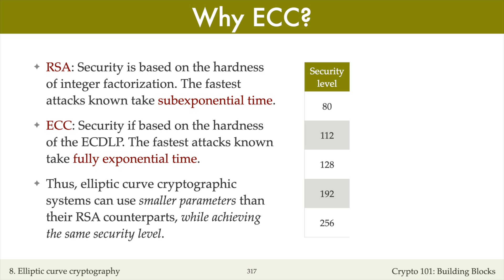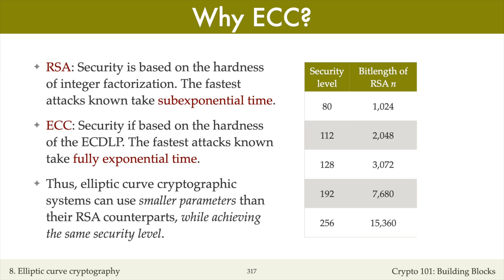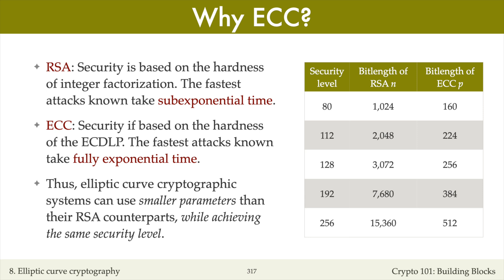More concretely, to achieve five security levels shown in the table, one can use RSA with moduli n of given bit lengths. These bit lengths come from estimates for factoring numbers of that bit length using the number field sieve. On the other hand, the bit lengths of the prime p in elliptic curve cryptographic systems for achieving the five security levels is just twice the security level. This is because Pollard's algorithm for finding discrete logarithms in an elliptic curve over a prime of l bits takes roughly the square root of 2 to the l. Hence, at the 128-bit security level, one should use RSA with moduli 3072 bits in length, whereas one can use ECC with a modulus p that is only 256 bits.